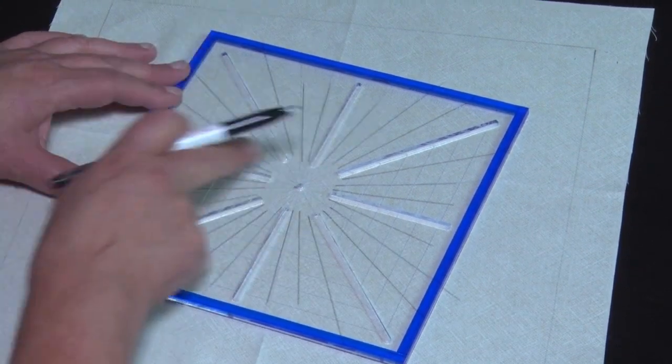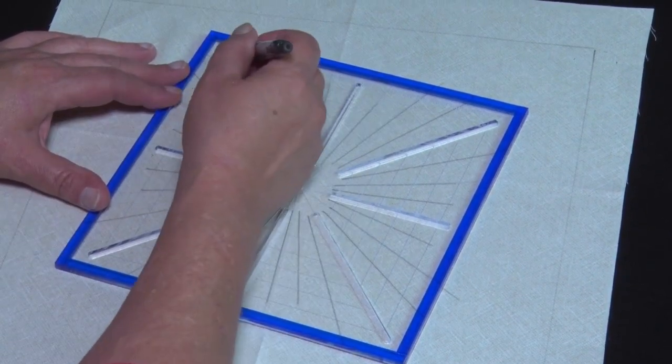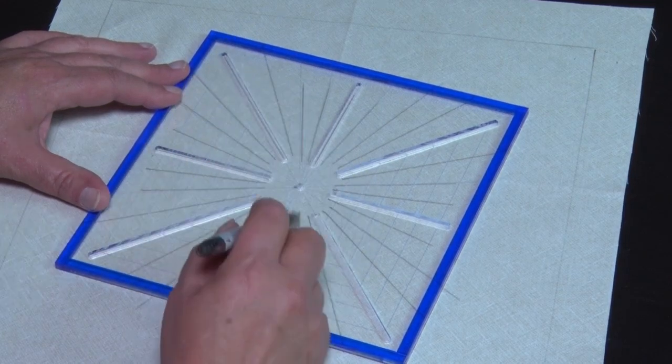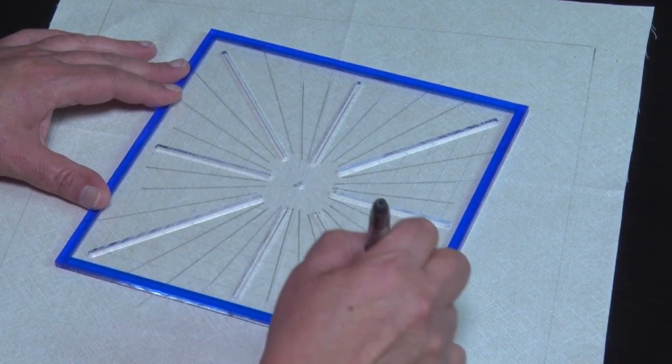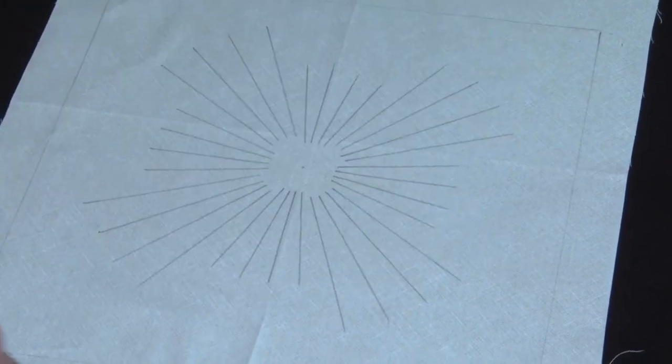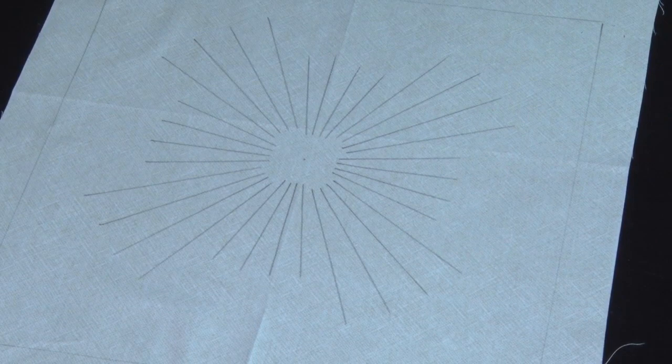I've just turned the template again so the line is on the other side, sitting on top of our reference lines. Mark another eight lines in here. And this will give me 32 reference lines. So there's my 32 reference lines.